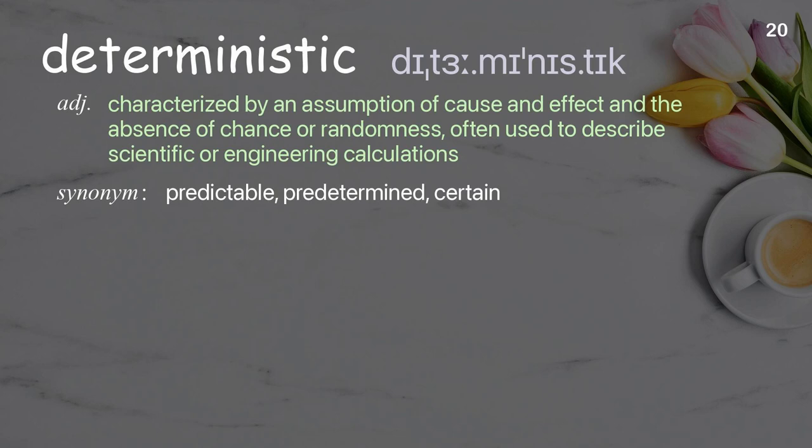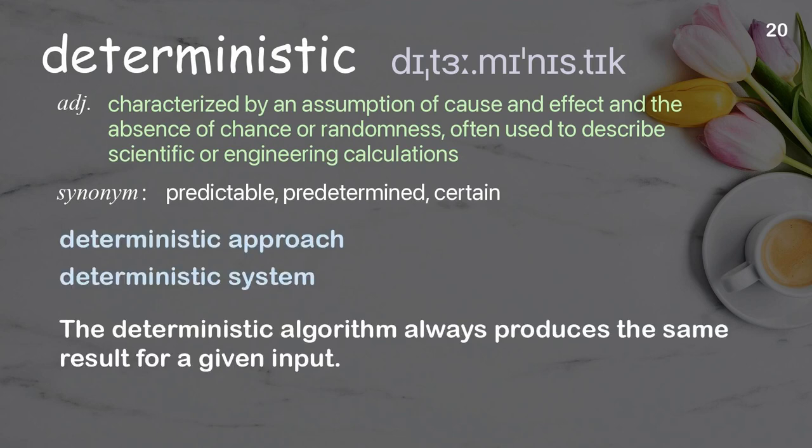Deterministic. Characterized by an assumption of cause and effect and the absence of chance or randomness; often used to describe scientific or engineering calculations. Examples: deterministic approach, deterministic system. The deterministic algorithm always produces the same result for a given input.